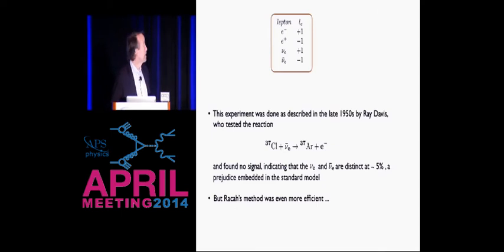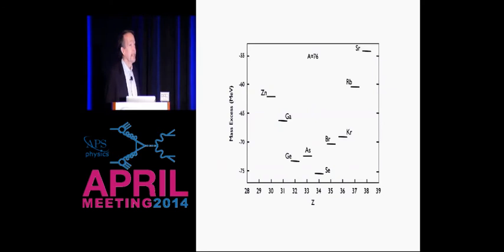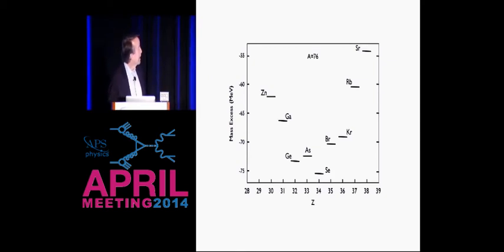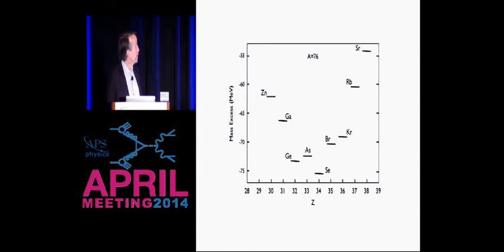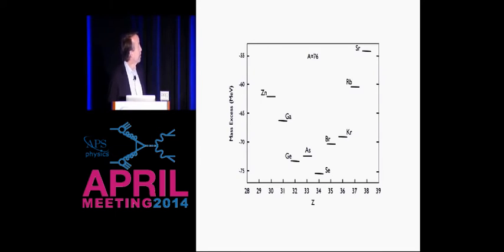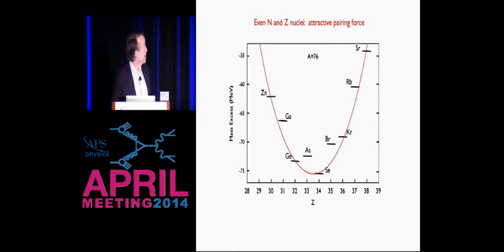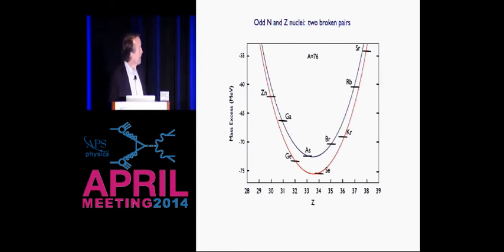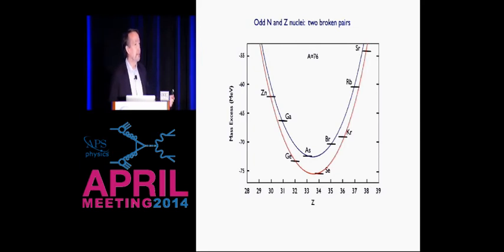But Racah's method was even more powerful — much more convincing and more efficient. It depends on really interesting properties of nuclear physics. What I've shown here are the various isotopes of mass 76 in nuclei, plotted as a function of their charge. If you have an even Z, that corresponds to even numbers of protons and neutrons; if odd Z, odd-odd. If you fit curves to these energetics, the even isotopes follow a parabola, while the odd isotopes are shifted upward — representing the nuclear pairing force. It costs energy to break a neutron pair or proton pair, so all odd-odd isotopes are less energetically favored than even-even isotopes.